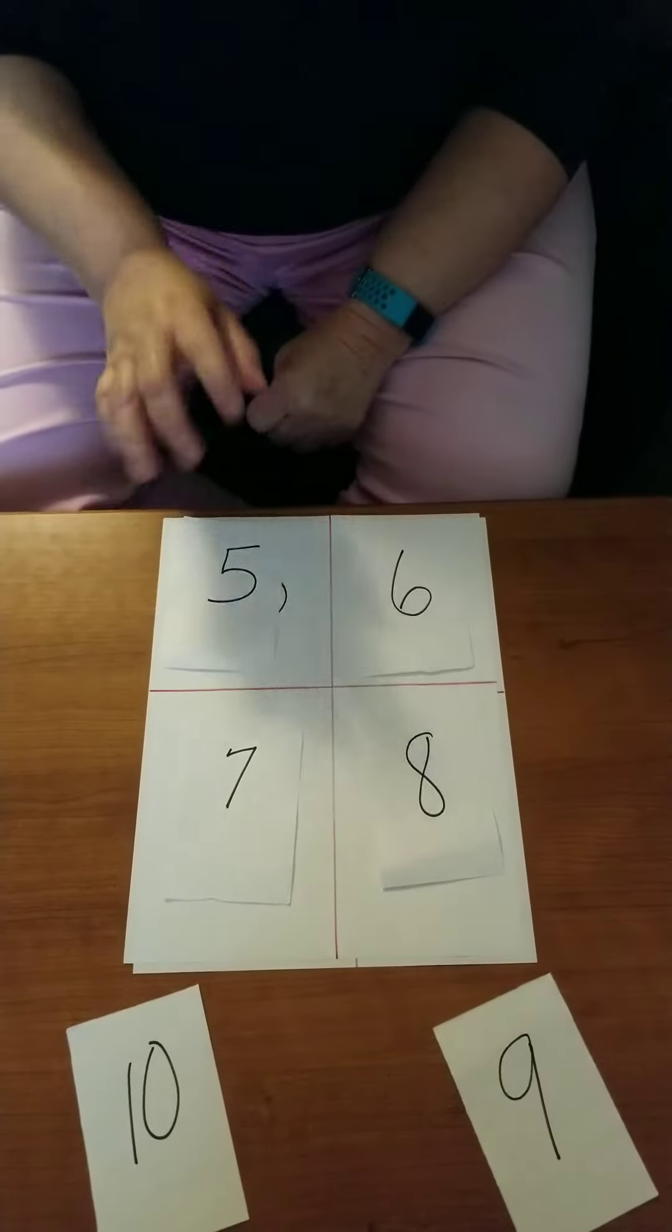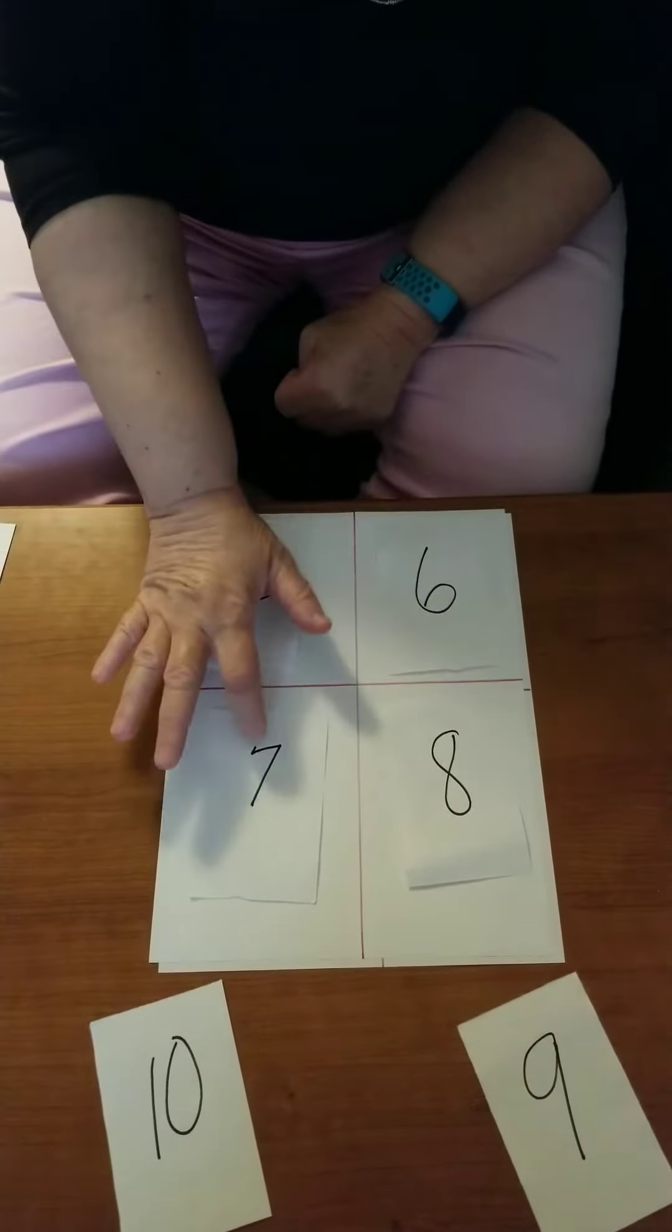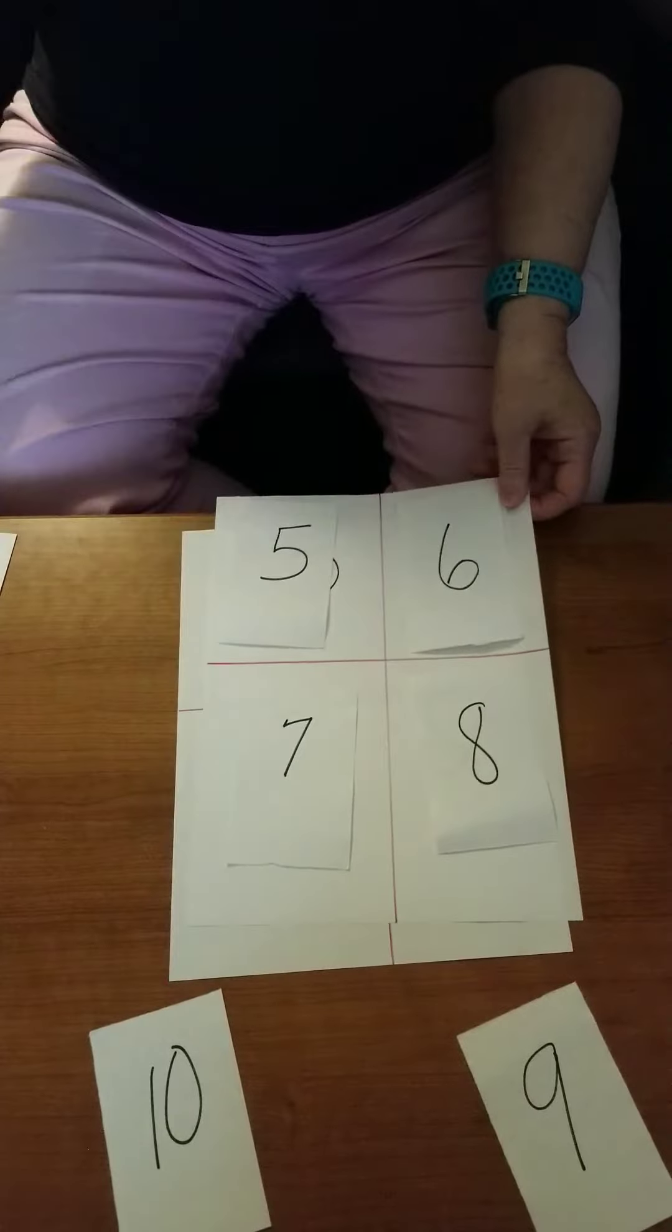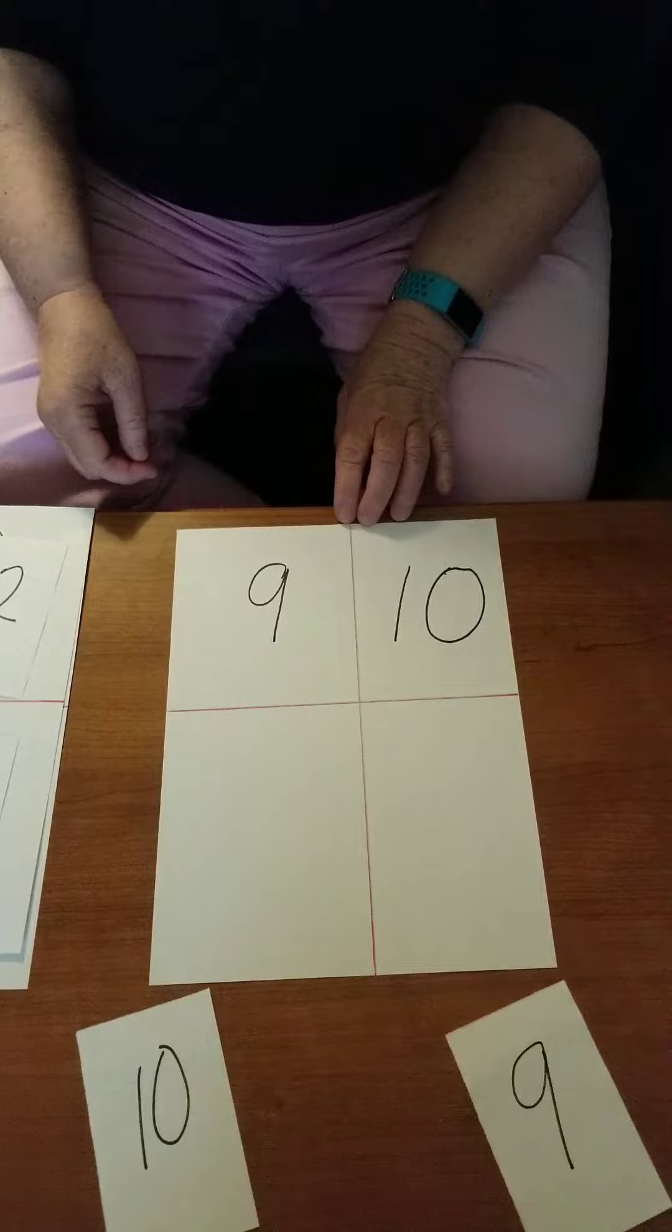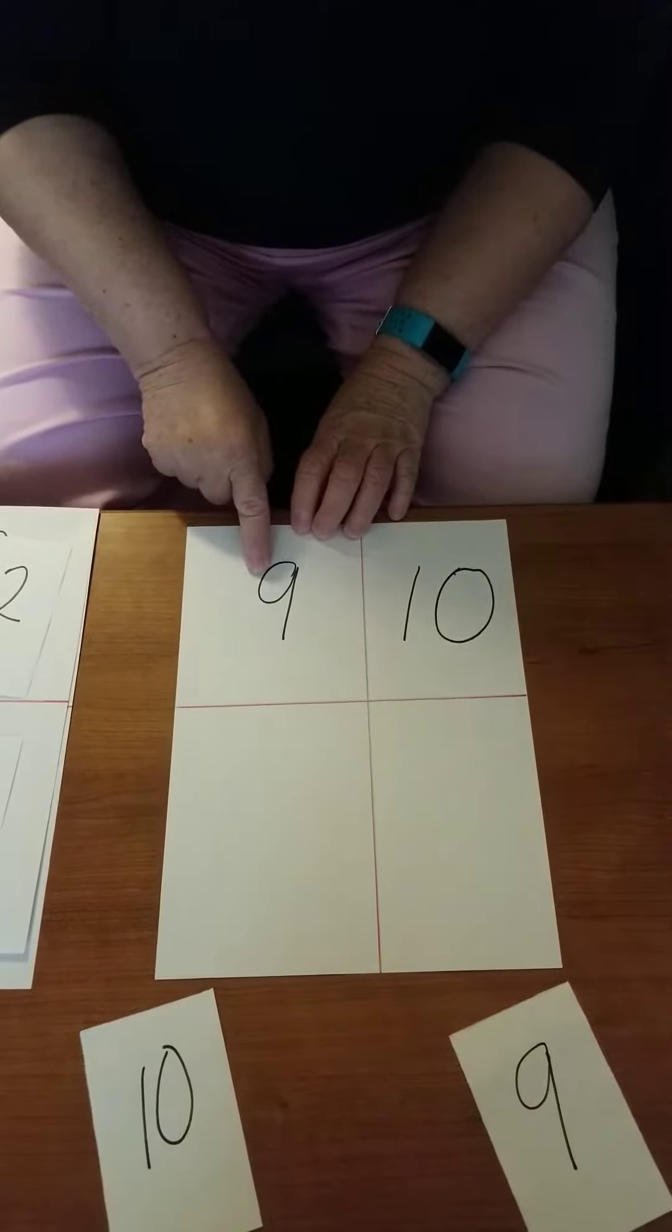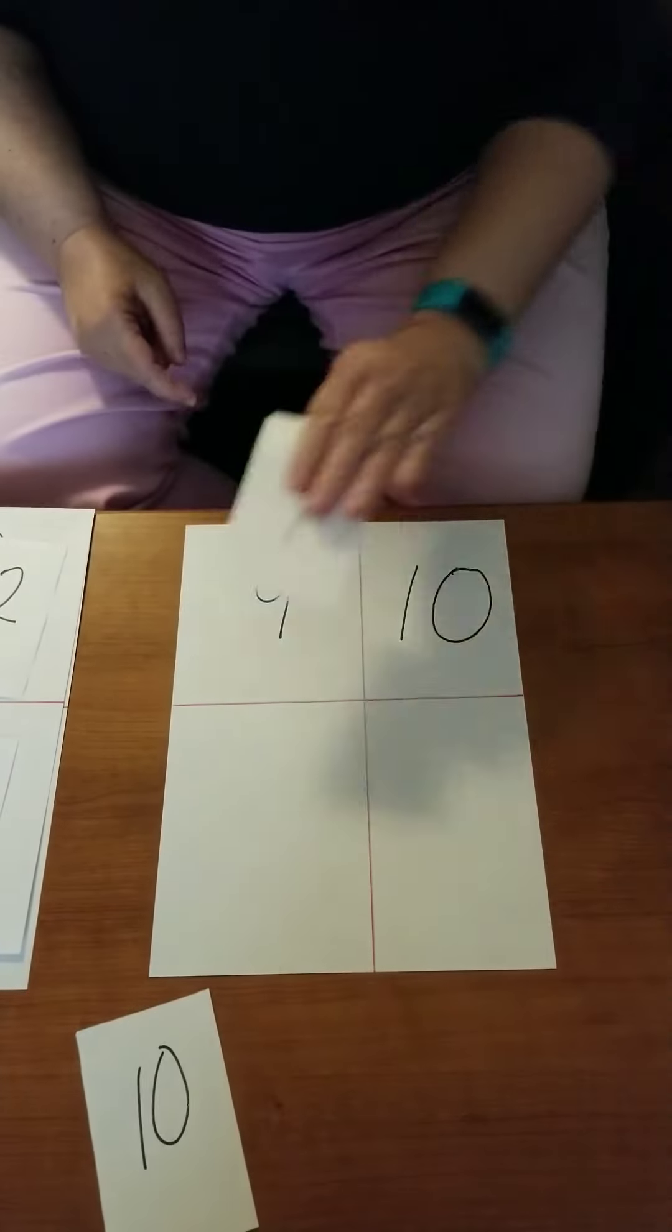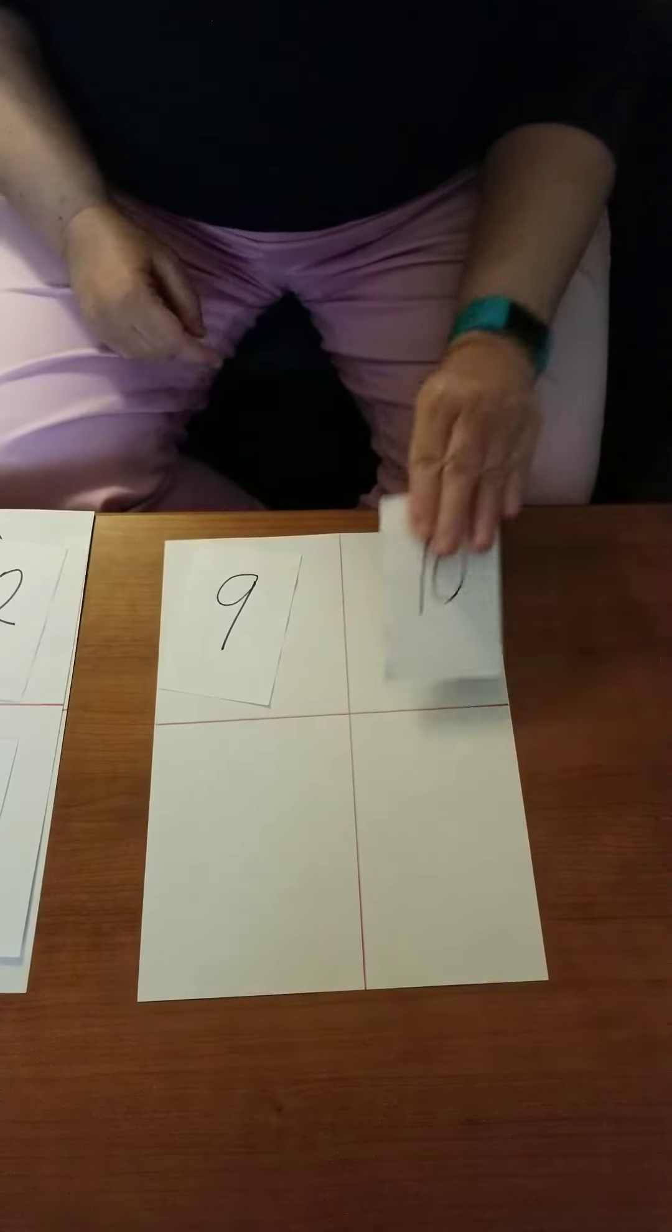So we have matched and identified five, six, seven, and eight. Okay my friends, let's keep looking. We still have some numbers to get to number ten. Here is number nine. Let's find number nine. Here is number nine. And here is number ten.